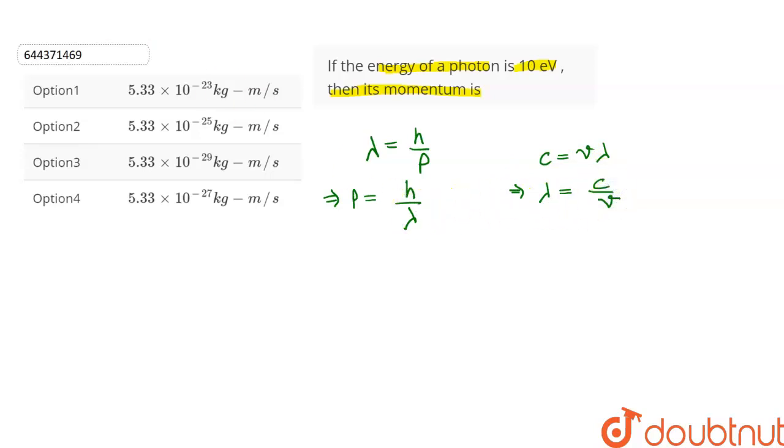Let's substitute the value of lambda in this equation. This will give us P is equal to H nu upon C. Energy E is equal to H nu. So we can finally write P is equal to E upon C.